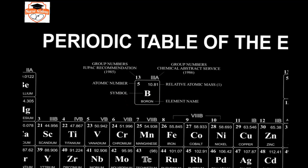The number at the top, often in the darkest font — the smaller number without decimal places — is the atomic number. The atomic number is the number of protons in the element.